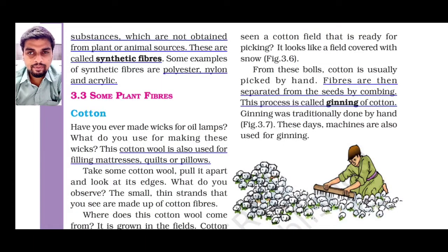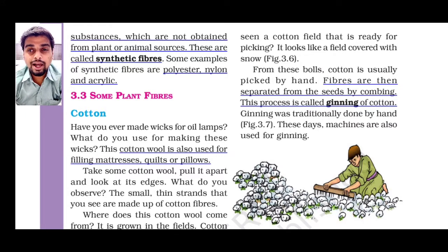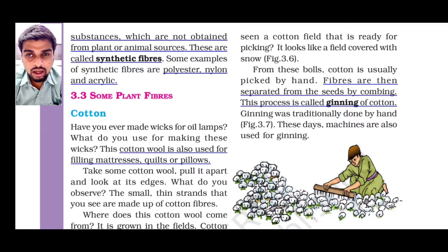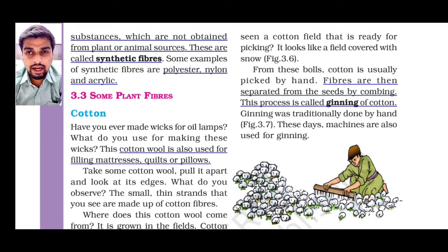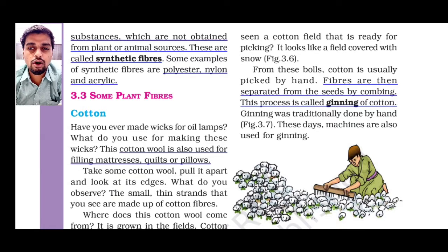The next topic is ginning. Ginning is the first and simplest process in which fibers are separated from the respective plant parts. In cotton, they are separated from seeds. In earlier times, they used hand picking — they used hands to separate fibers from the plant. Nowadays, there are machines.